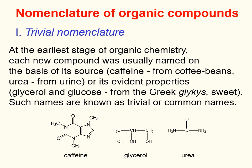Today, in organic chemistry, several types of nomenclatures are used. Firstly, the trivial nomenclature. At the earliest stage of organic chemistry, each new compound was usually named on the basis of its source or its evident properties. Such names are known as trivial or common names.